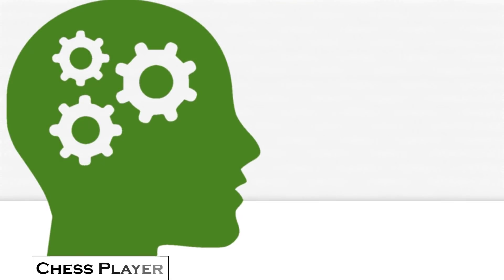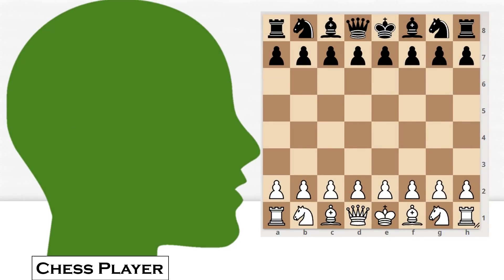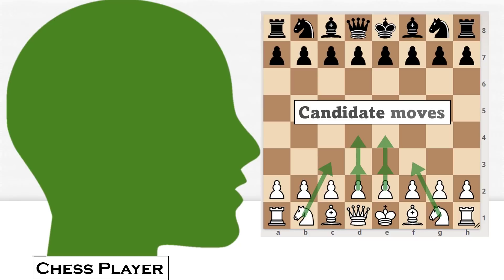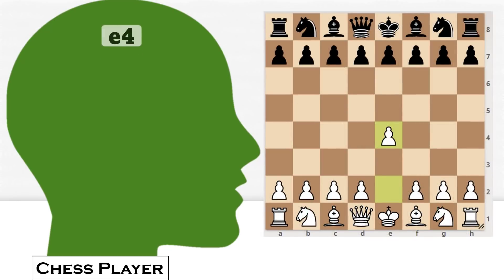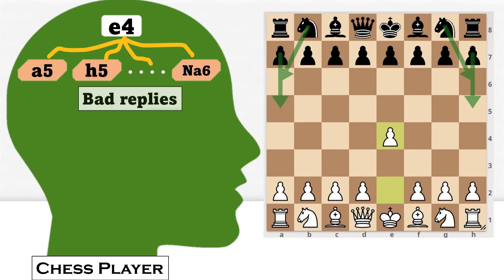Before we jump into the solution, let's first analyze how a chess player thinks. When a player has to make a move, he thinks of several possible moves on the board, known as candidate moves. He then thinks of possible replies from his opponent for each of his candidate moves. And according to him, some replies can be good and some replies can be bad.